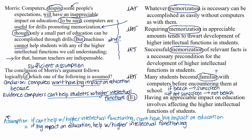To test choice E, try adding it to the evidence from the passage and see if it leads to the same conclusion. Choice E tells us that appreciable impact on education involves affecting higher intellectual functions. The support from the passage told us that machines can't help students with higher intellectual functions. Combining these two statements, we can definitely conclude that machines can't have an appreciable impact on education — and that is the conclusion from the passage. We have found the assumption that guarantees the conclusion to follow from its evidence.